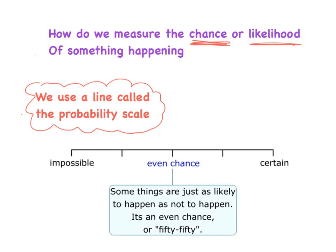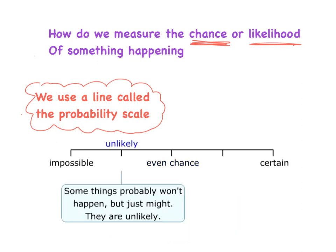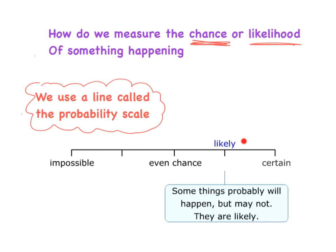In the middle we have an even chance — that means some things are just as likely to happen as not to happen. It's an even chance, or as you might have heard before, it's what we call a 50-50 chance. In between impossible and even chance, we have unlikely — things that probably won't happen but just might. And this next one is called likely, which means things that probably will happen but may not. So this is the scale we use to determine the probability of something happening.